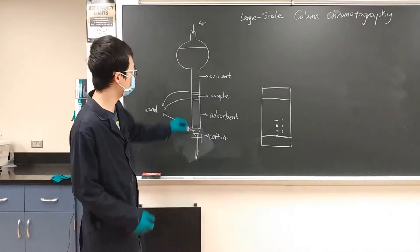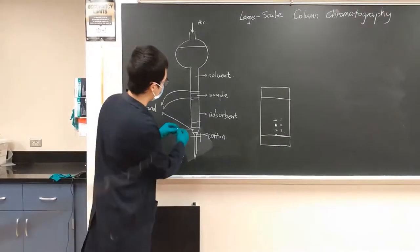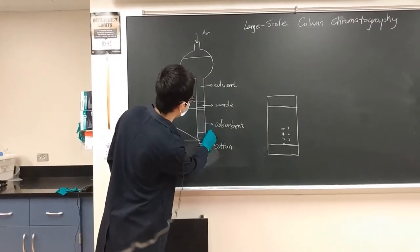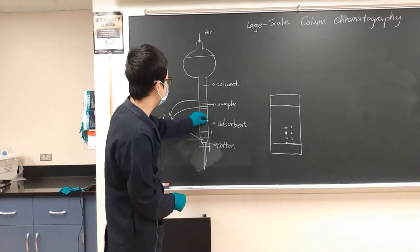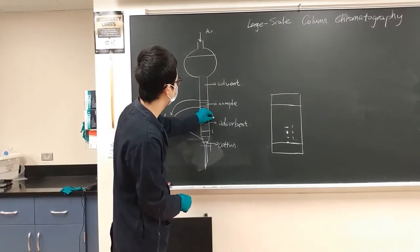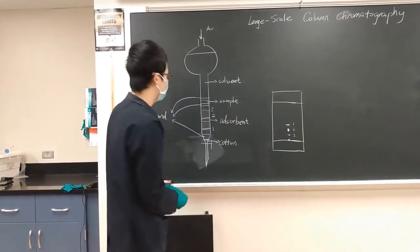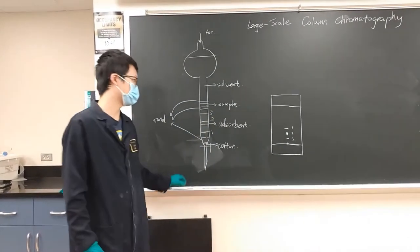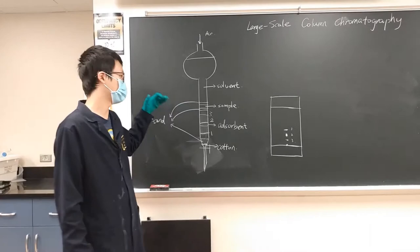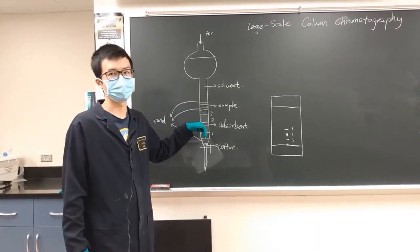In the large-scale column, you can just consider this TLC upside down. The first sample will elute out first, then second, then third. The more polar sample will stay on top; the least polar sample will go to the front.